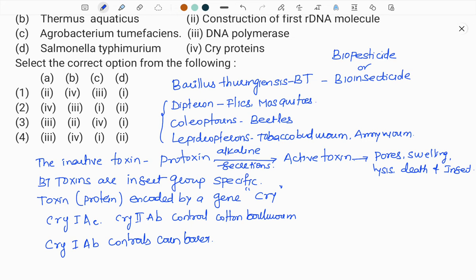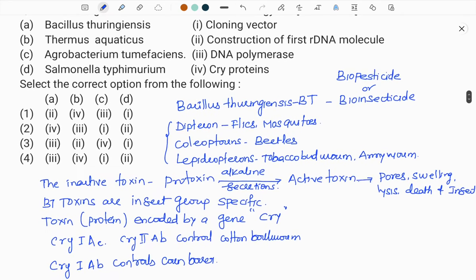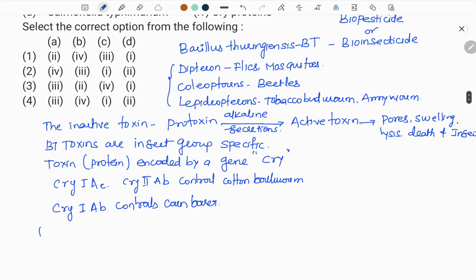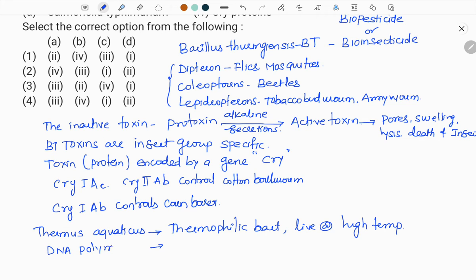Next we have Thermus aquaticus. Thermus aquaticus is a thermophilic bacteria, means it can sustain high temperature, that it lives at high temperature. In geysers and hot water springs they live.